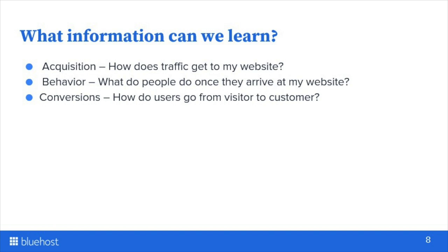The second question we can answer is: what do people do once they arrive at my website? When they get there, do they click around? If they're clicking around too much, it might indicate poor navigation — they can't find what they're looking for. Or maybe they're browsing through multiple products. Sometimes people leave immediately, which contributes to something called the bounce rate. Maybe your site ranked on a Google search result you didn't intend to, so people arrive and leave because they're in the wrong place. Using Google Analytics, we can determine what people do when they arrive.